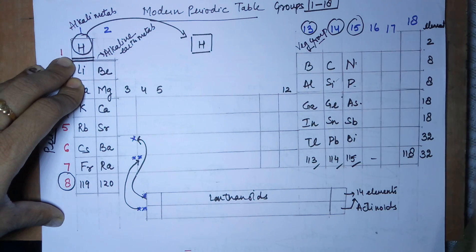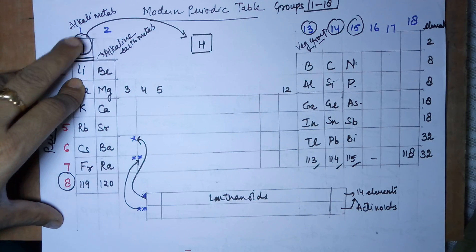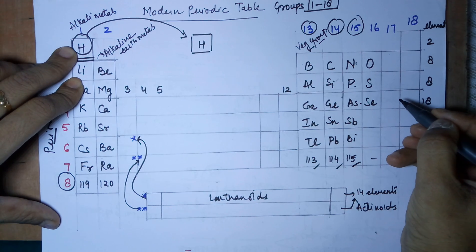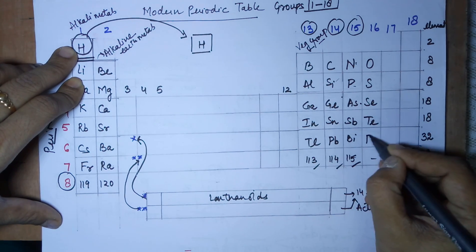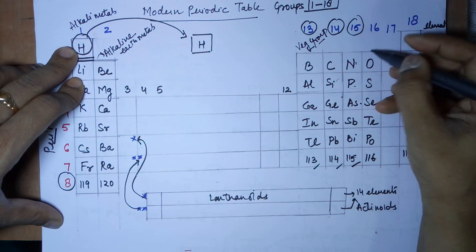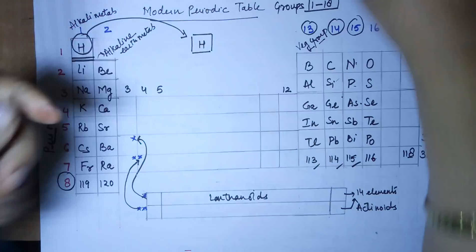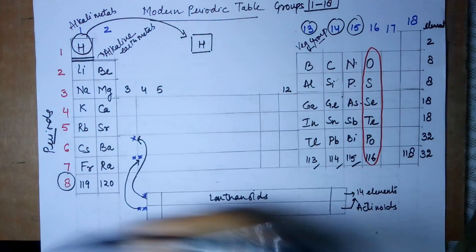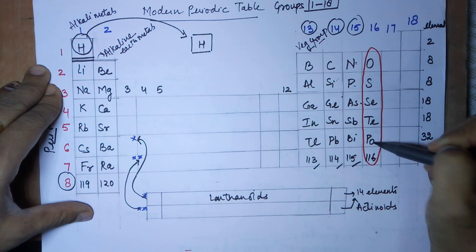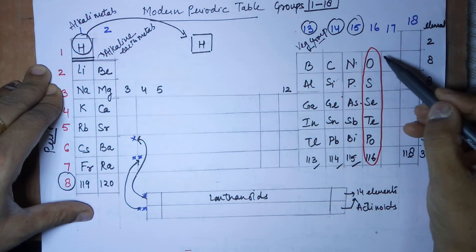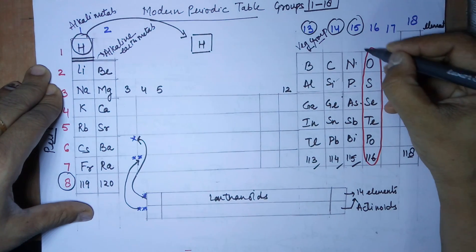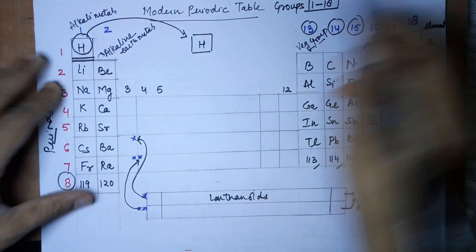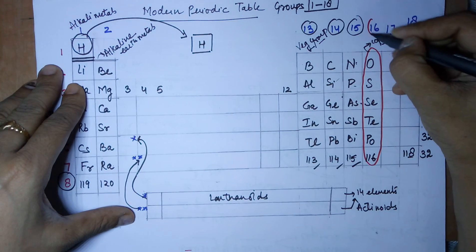Group number 16 contains oxygen, sulfur, selenium, tellurium, and polonium — the last member would be 116. I mark it in red and call it the anti-disciplinary group because the mnemonic is: 'Us se copy karo' — it promotes copying! This group also has the special name chalcogens, which means ore-forming.